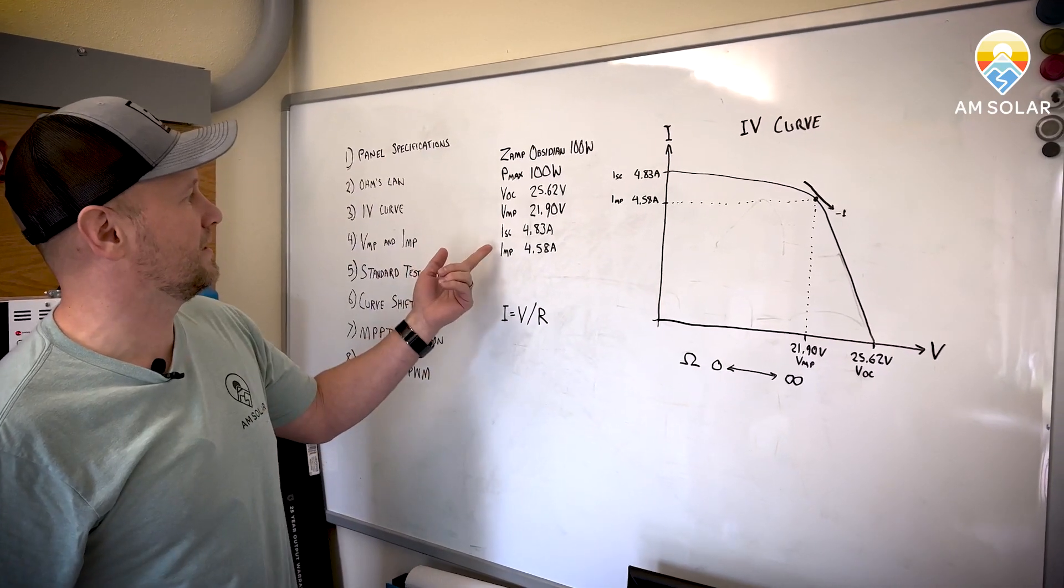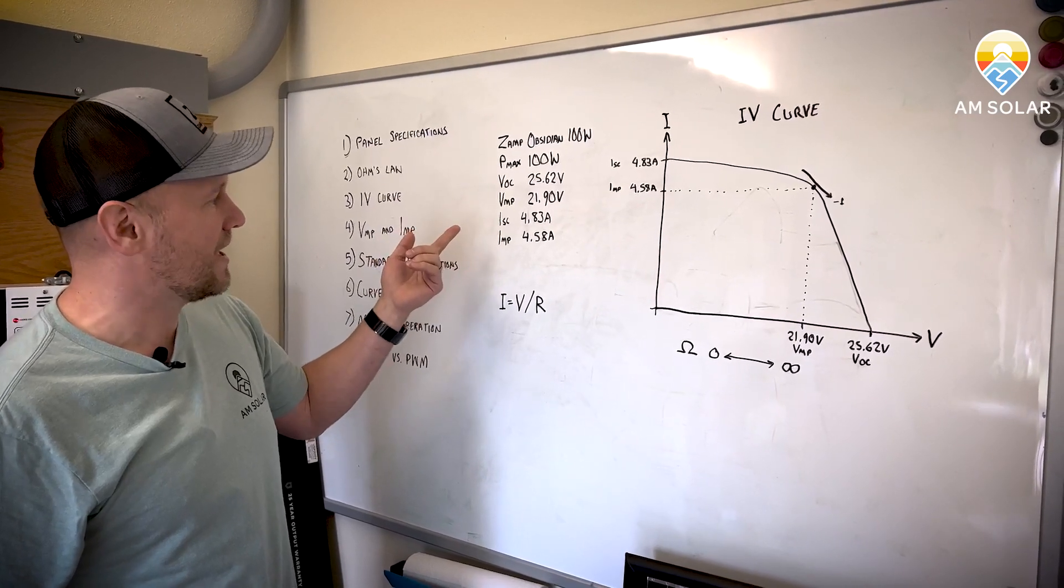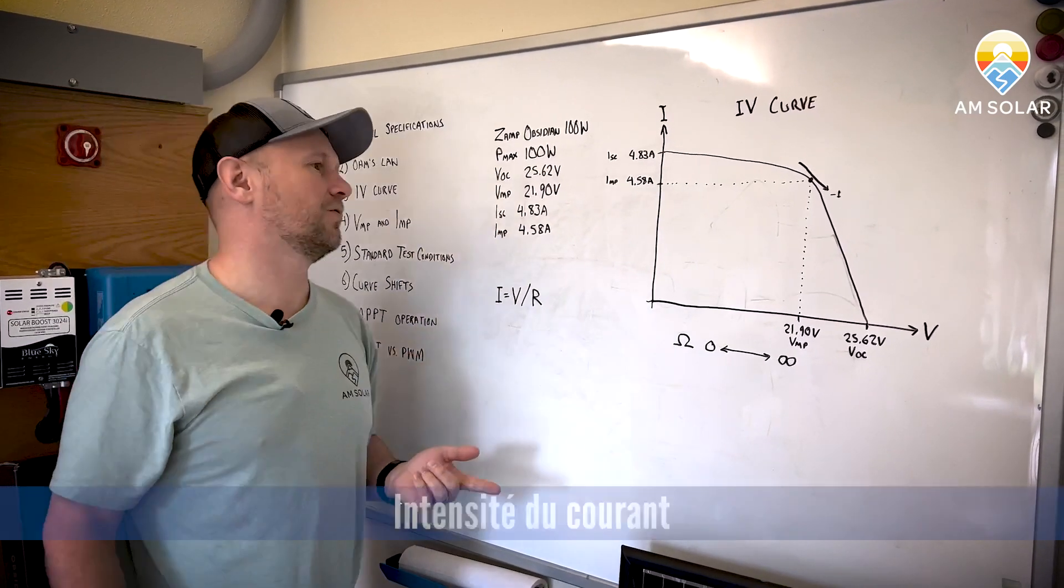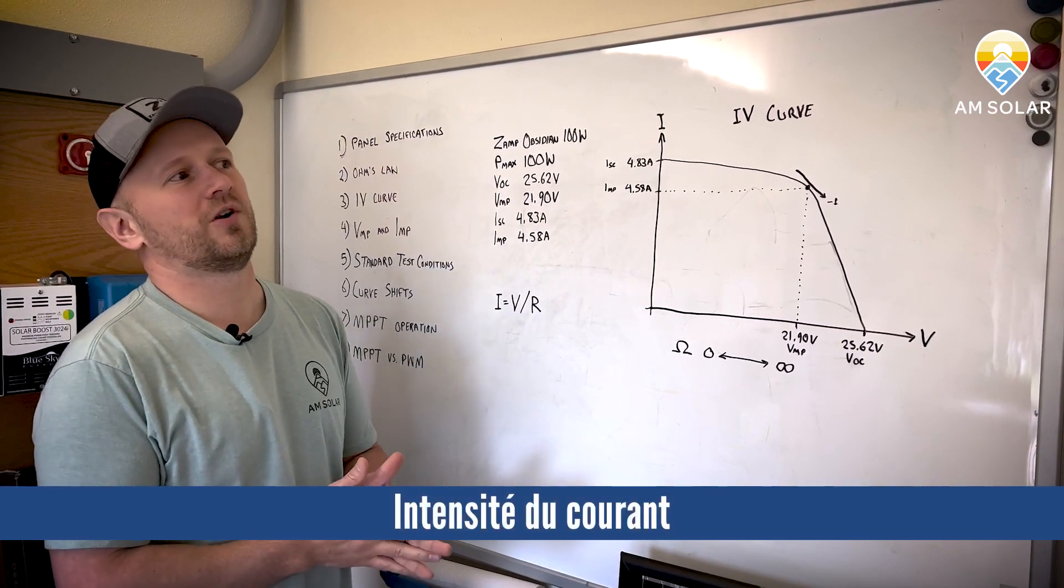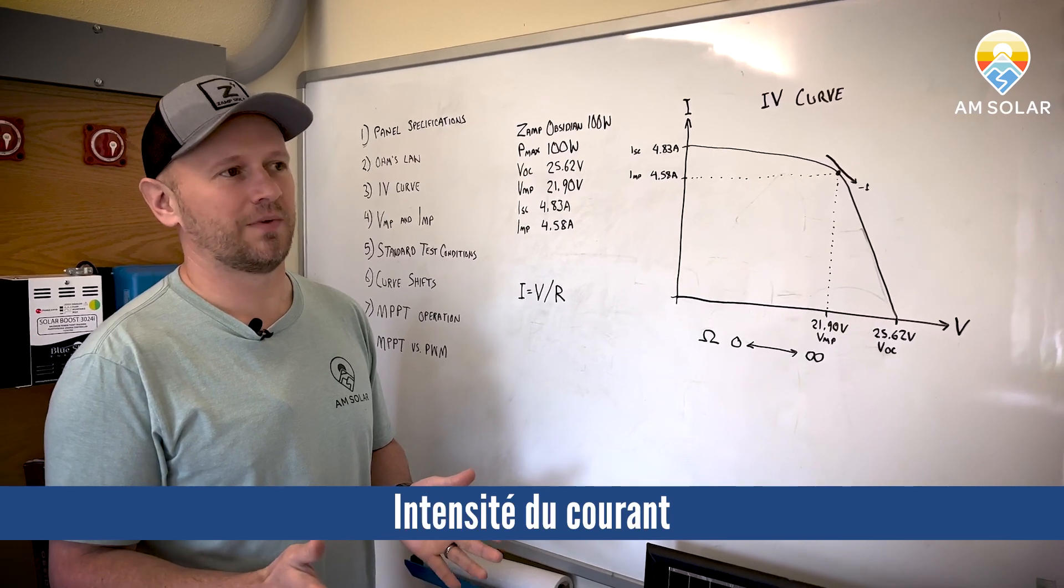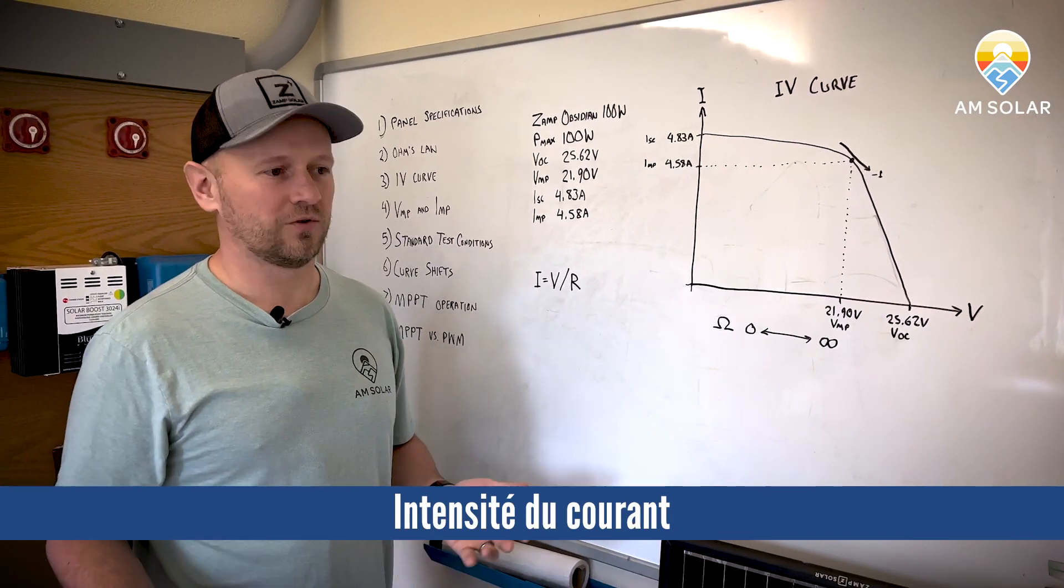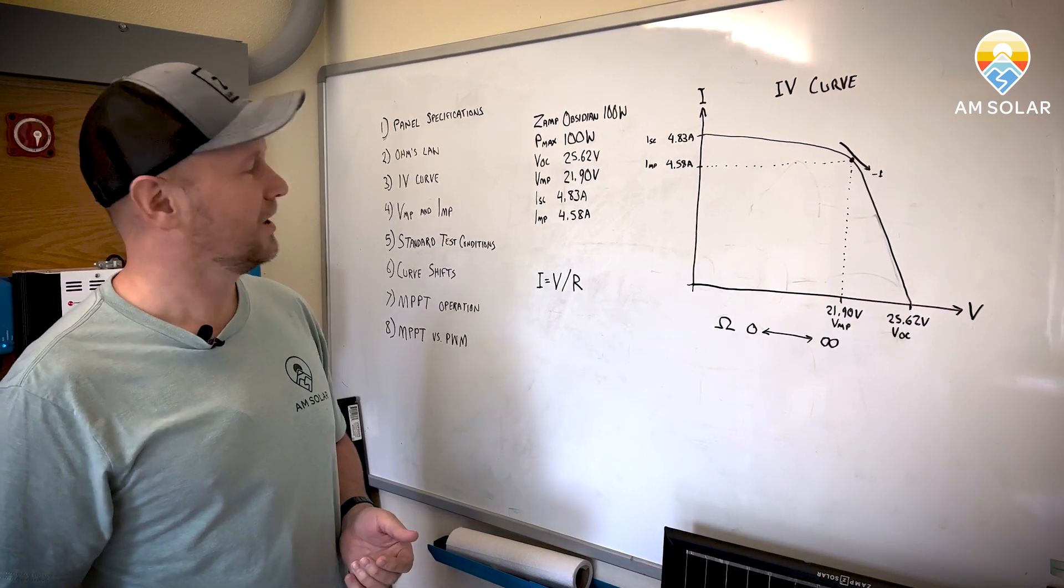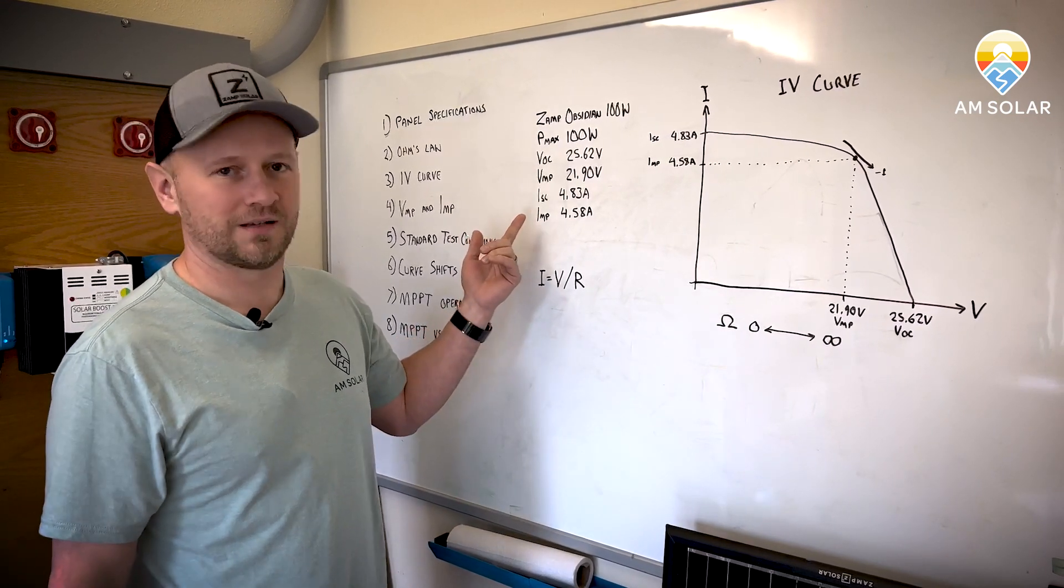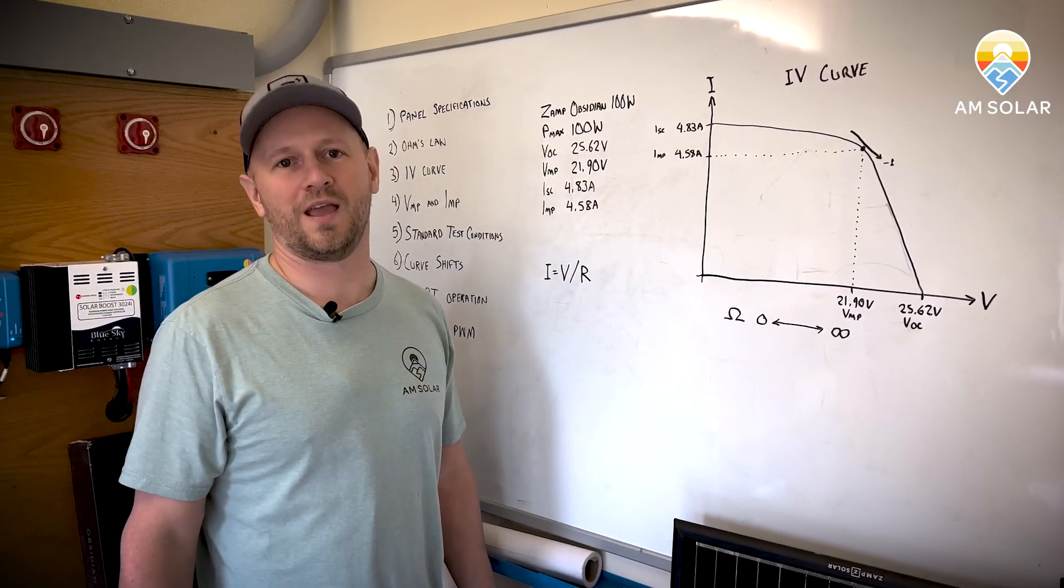And you're wondering why is there an I instead of like a C or an A. And the I stands for, it's French for intensité du courant, something like that. My accent's a little off. And even though we aren't French or most of us here aren't French, we're going to use an I instead of something that might seem a little more reasonable like a C for current or an A for amps.